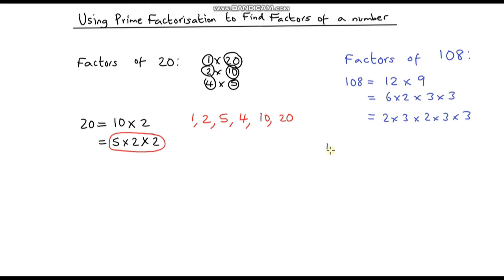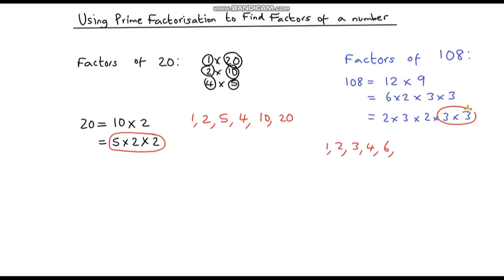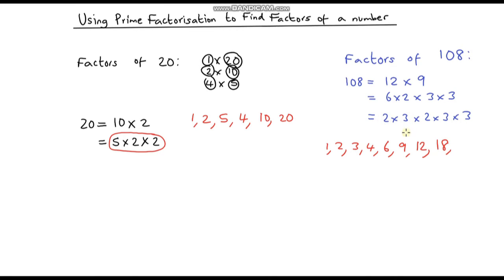Let's look at all the combinations. Starting with 1, which is a factor of all whole numbers. Then 2 and 3 for the single numbers. For two-number combinations: 2 times 2 is 4, 2 times 3 is 6, and 3 times 3 is 9. Those are all our two-number combinations. For three-number combinations: 2 times 2 times 3 is 12, and 2 times 3 times 3 is 18.